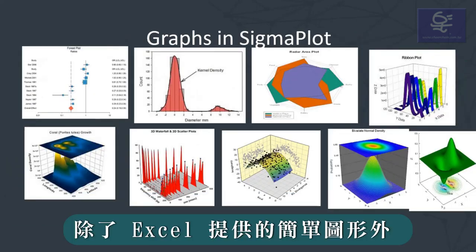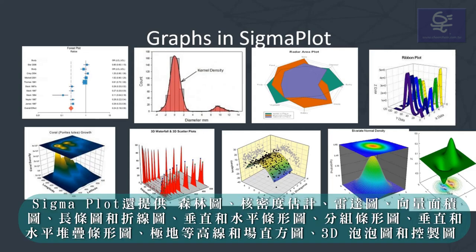In addition to the simple graphs offered by Excel, Sigmaplot also offers forest graphs, kernel density, radar area plot, vector, area plot, scatter, line, scatter and line, step, vertical and horizontal bar, grouped bar, vertical and horizontal stacked bar, box, polar, contour line and field, histograms, ternary, bubble, pie and control charts.